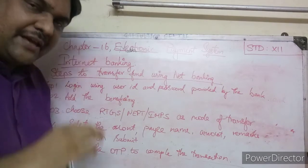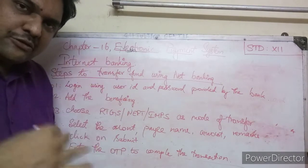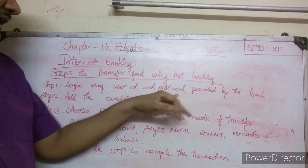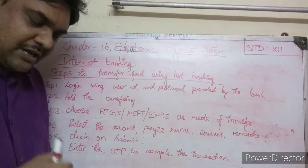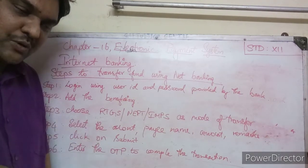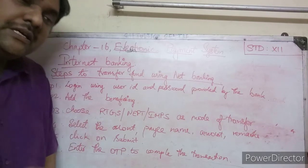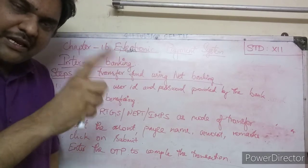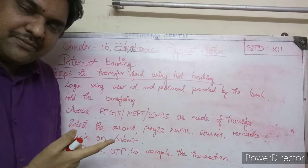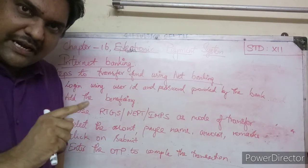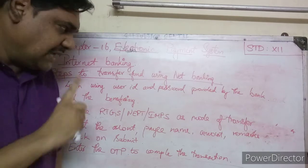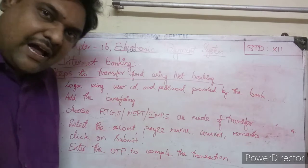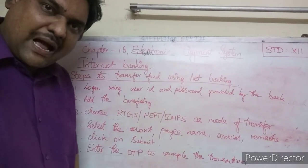Now let's see the steps to transfer funds using net banking. First, open your laptop or computer, go to the official website of your bank, and click sign in or login. Enter the user ID and password provided by the bank. Then, go to the main menu and select 'Add Beneficiary' or 'Manage Beneficiary' option.